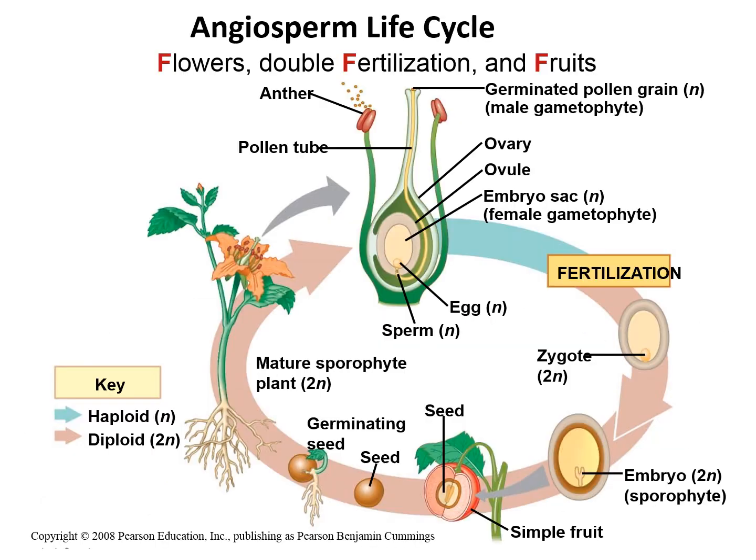Let's discuss about the angiosperm life cycle. In angiosperms, the sporophyte is the dominant generation. The large plant that we see is the sporophyte. The gametophytes are reduced in size and depend on the sporophyte for nutrients. The angiosperm life cycle is characterized by three features: flower, double fertilization, and fruit — these are the unique features of the angiosperm life cycle.